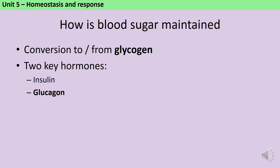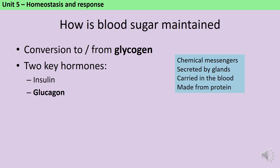In order to control blood sugar and keep it at a consistent level, the simple sugar glucose is converted into a much larger storage molecule called glycogen, and when your cells need more sugar the large glycogen is converted back into glucose. This is controlled by the action of two key hormones. Hormones are chemical messengers that are secreted by the glands of the endocrine system, carried in the blood, and made out of protein. The two hormones we need to know about are insulin and glucagon.